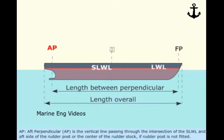Aft Perpendicular (A.P.) is the vertical line passing through the intersection of the Summer Load Waterline and the aft side of the rudder post, or the center of the rudder stalk if a rudder post is not fitted.